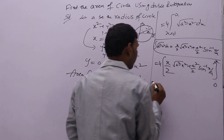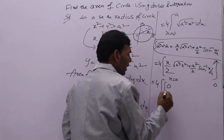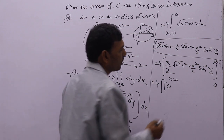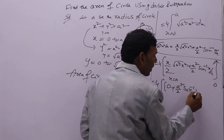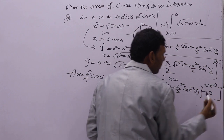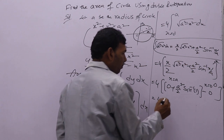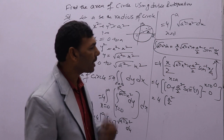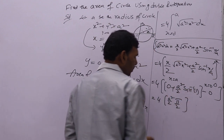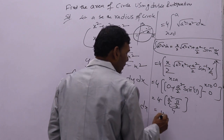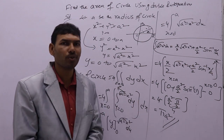Applying limits from 0 to a: when x equals a, the first term becomes 0 (since a squared minus a squared equals 0), and the second term gives a squared by 2 times sin inverse of (a by a) equals a squared by 2 times sin inverse (1). When x equals 0, everything is 0. Since sin inverse of 1 is pi by 2, we get 4 times a squared by 2 times pi by 2. The 2s cancel, giving pi a squared — the well-known formula for area of a circle with radius a.